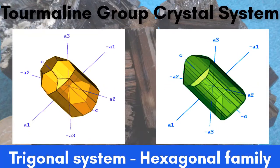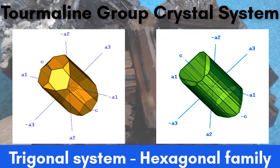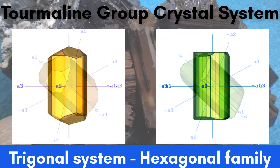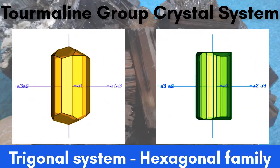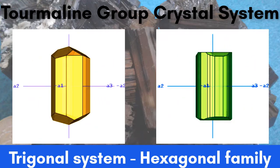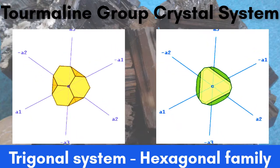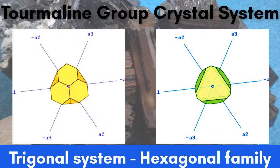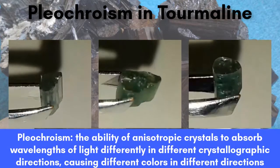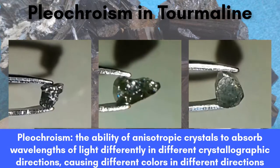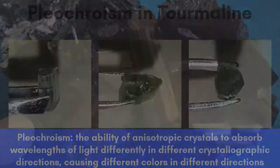Tourmaline is in the trigonal crystal system, hexagonal crystal family. These 3D graphics show the crystallographic forms of tourmaline. In both cases, when we look down the c-axis, they look like bloated triangles that ate too many Krispy Kremes. Some tourmaline is also pleochroic, causing deeper color along the c-axis and lighter coloring in side view.